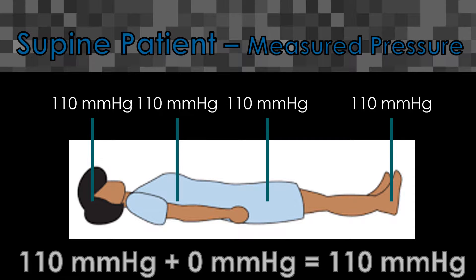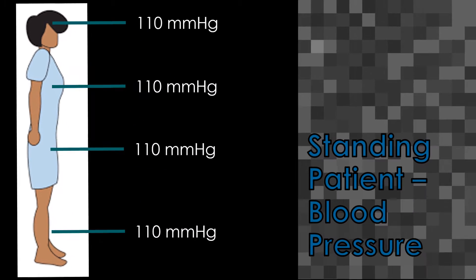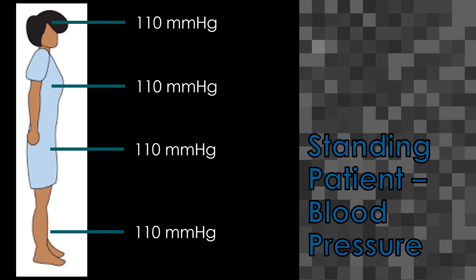To get the measured pressure for each level, we add the blood pressure of 110 millimeters of mercury plus the zero millimeters of mercury of hydrostatic pressure to get a total of 110 millimeters of mercury for measured pressure. So let's take a look at the standing patient. Remember that real blood pressure is the same throughout the body, so again our patient has a blood pressure of 110 millimeters of mercury at all levels in the body.